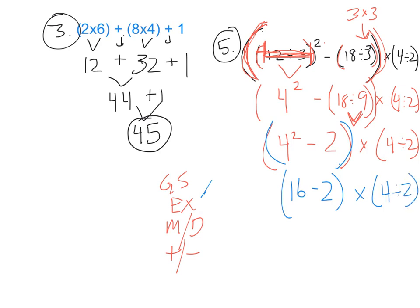I have two sets of parentheses, similar to question 3. Working left to right: 16 minus 2 is 14. No operations remain, so I can drop the parentheses. Then 4 divided by 2 is 2; I drop those parentheses too. My very last step: 14 times 2 is 28.